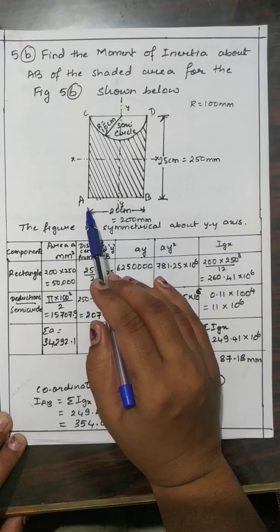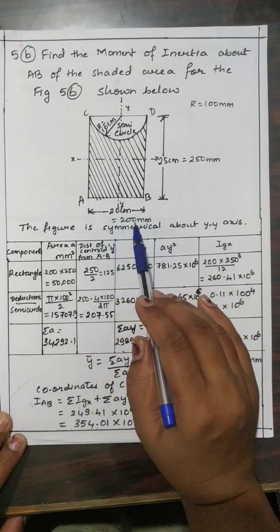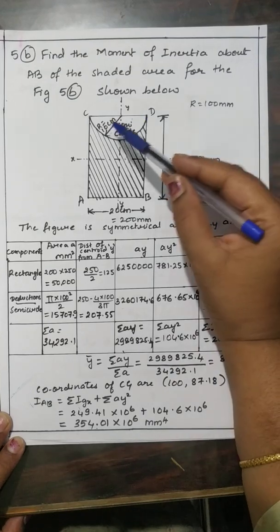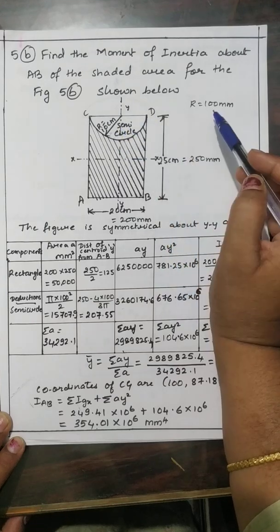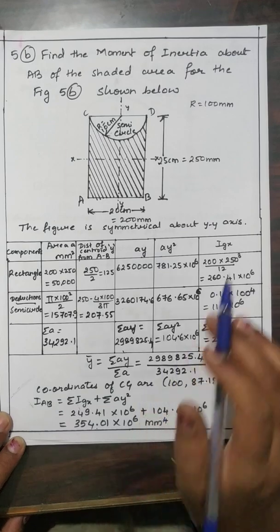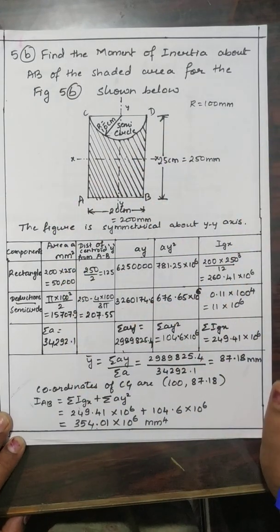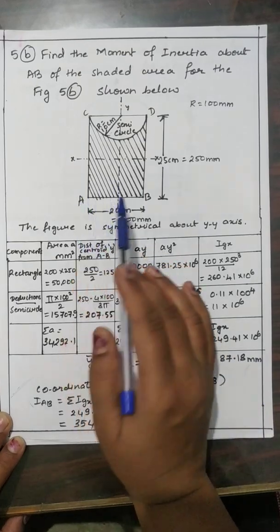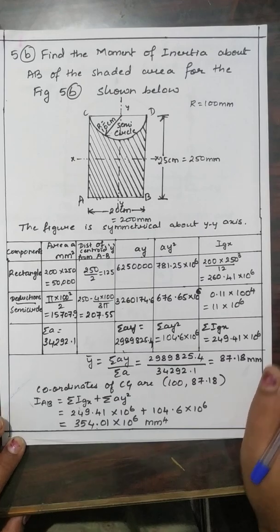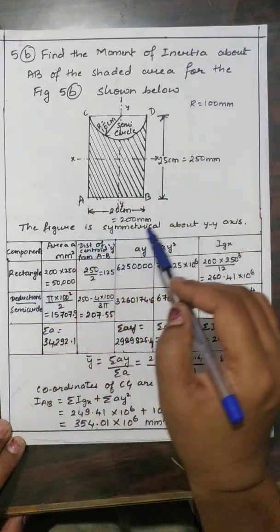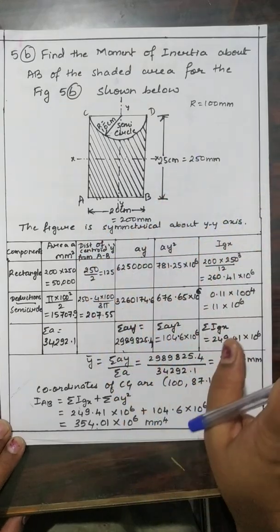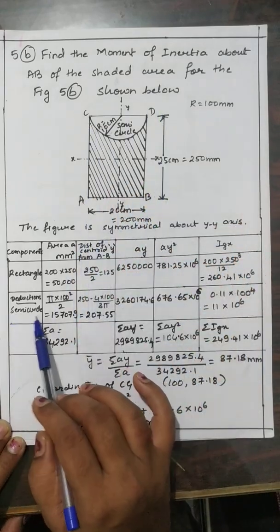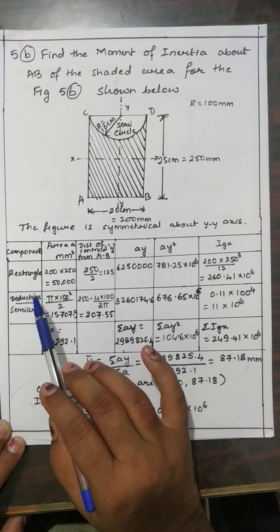The dimensions given are: breadth of the rectangle is 20 cm, that is 200 mm; depth D of the rectangle is 25 cm, that is 250 mm; and the radius of the semicircle is given as 10 cm, that is 100 mm. I have converted all dimensions into millimeters. This figure is symmetrical about the Y-axis. I have divided the figure into two simple figures: first the rectangle, then deducting the semicircle.